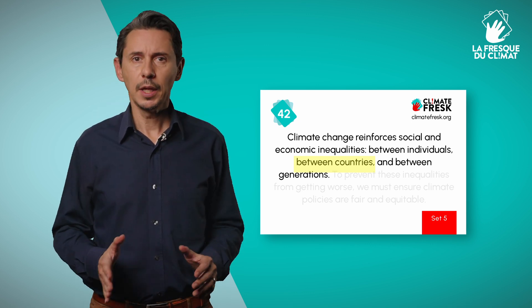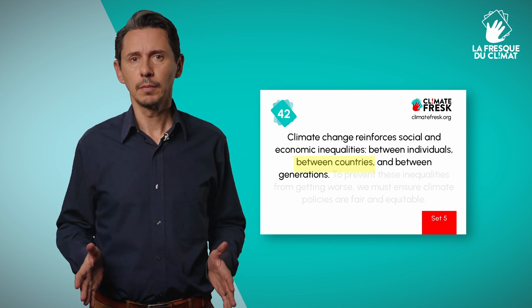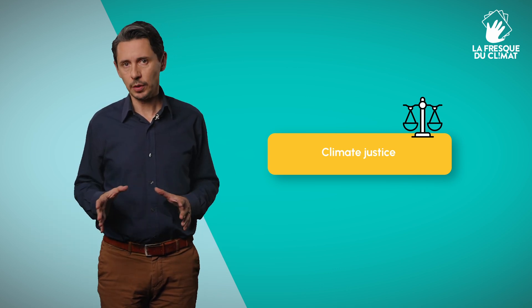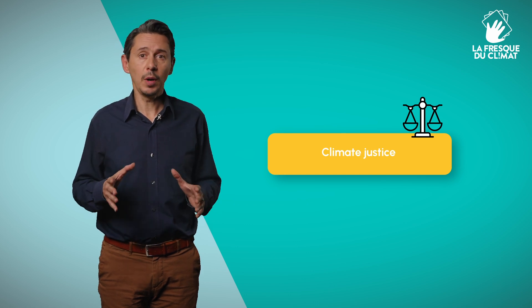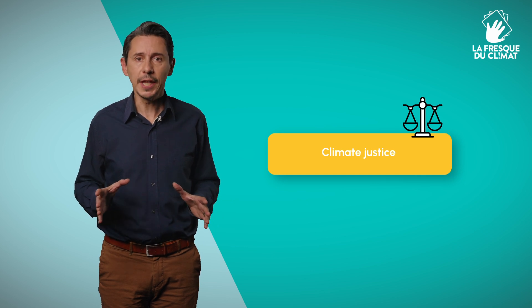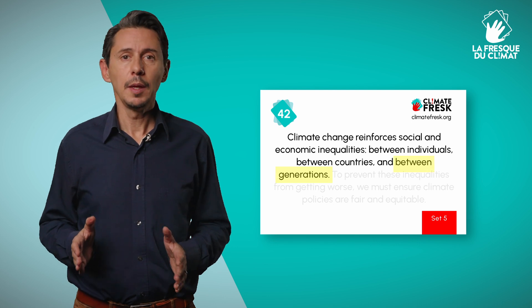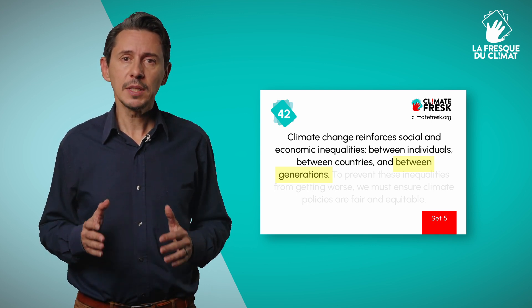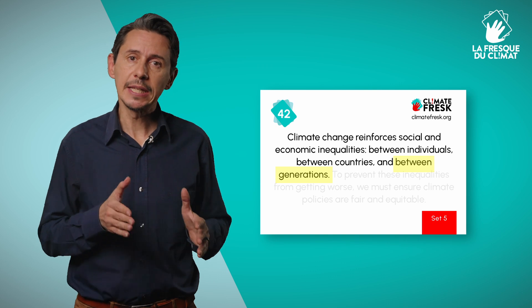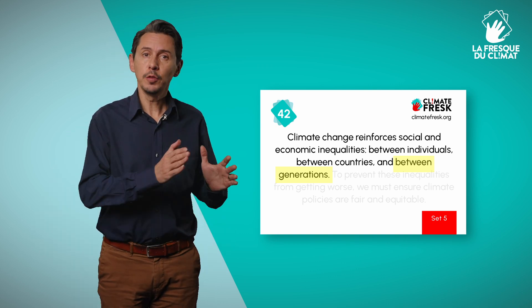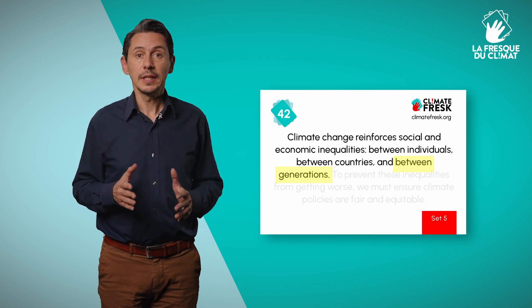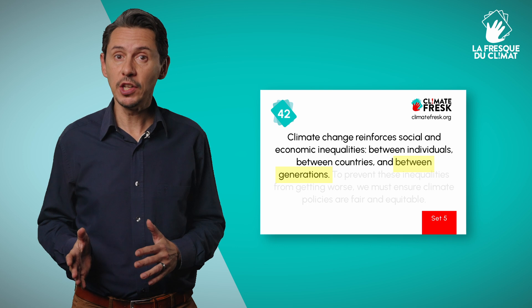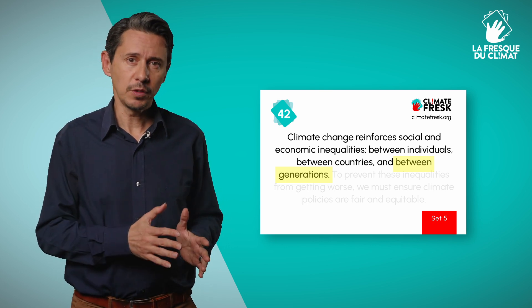The costs of mitigation and adaptation must be shared fairly — this is climate justice. It is very important to introduce this notion at this point of the workshop. Climate justice should become an obvious concept for everyone, and no longer only be associated with climate activism. Past and present generations who have benefited from industrial development and the mild climate must take the measure of the impact and reduce it now, for the sake of present and future generations. Failure to act would mean increasing inequality between generations — between those who had it all and those who will have to survive the consequences.